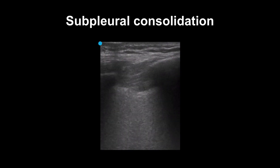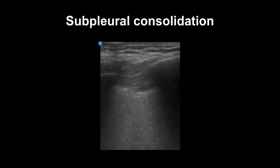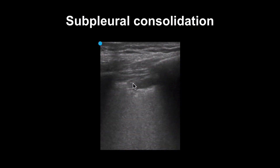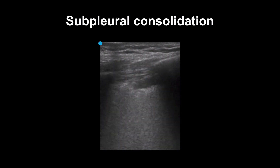You will occasionally see lung abnormalities in a pulmonary embolism. This is an example of a subpleural consolidation. Remember that ultrasound findings can be nonspecific. We can see this small subpleural consolidation here, and the patient was ultimately diagnosed with a pulmonary embolism. This subpleural consolidation corresponded to a lung infarct seen on their CT scan.